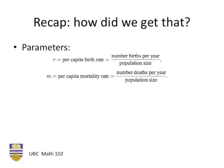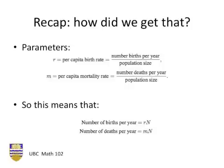Okay, where did that come from? First of all, let's consider the definitions of the parameters. The per capita birth rate r means number of births per year divided by population size. Similarly for the mortality rate. So this means that the number of births per year is simply r times n, and the number of deaths per year is m times n.